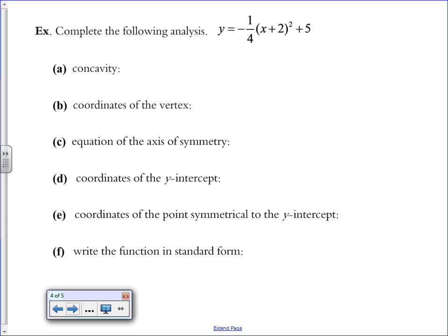Now complete the analysis of that function. You'll often be asked all these questions about the function. What is its concavity? Because it opened downward, we say that it is concave down. Coordinates of the vertex are negative 2, 5. Axis of symmetry is located at x equals negative 2. You have to write that as an equation of a vertical line.